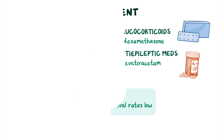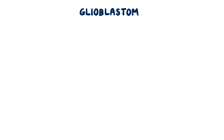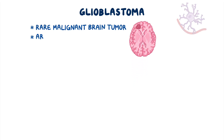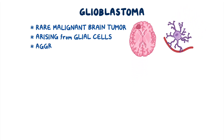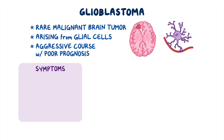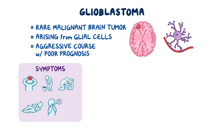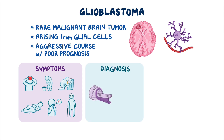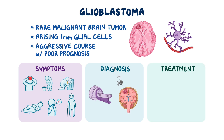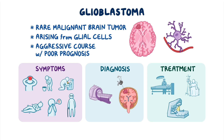As a quick recap: a glioblastoma is a rare malignant brain tumor arising from glial cells and has an aggressive course with poor prognosis despite treatment. Symptoms generally include a combination of headaches, nausea, vomiting, seizures, and neurological deficits. Diagnosis is made through imaging of the brain, with confirmation via tissue biopsy. Treatment generally involves a combination of surgery, chemotherapy, and radiotherapy.